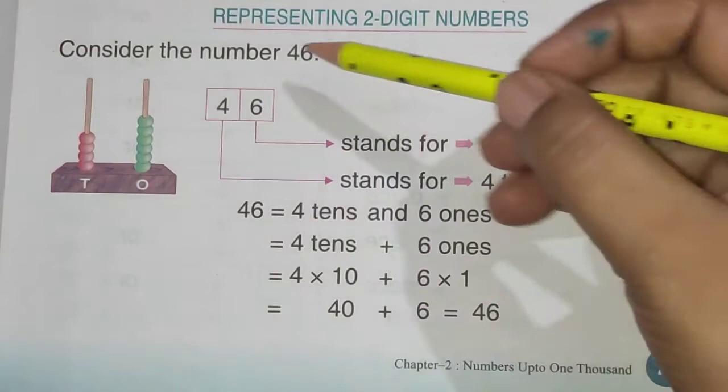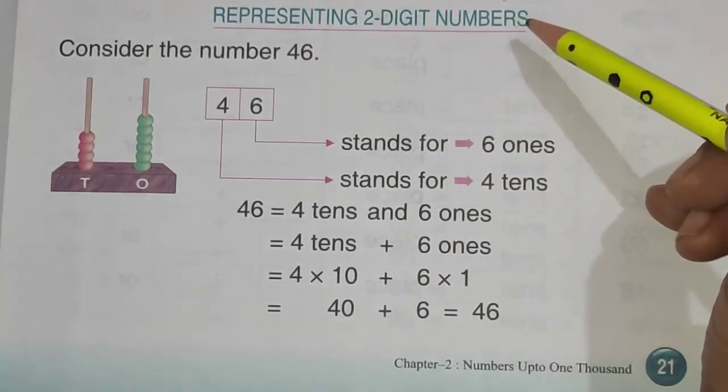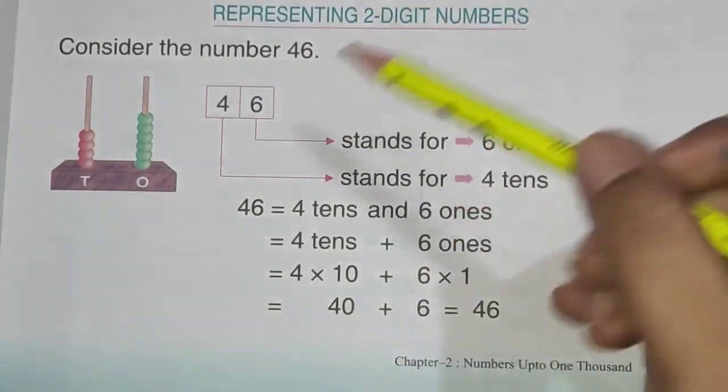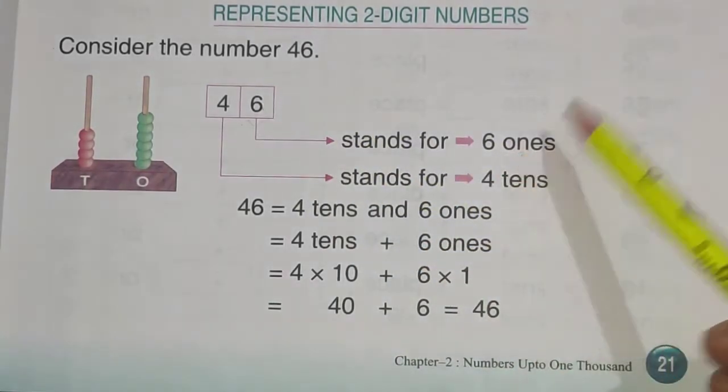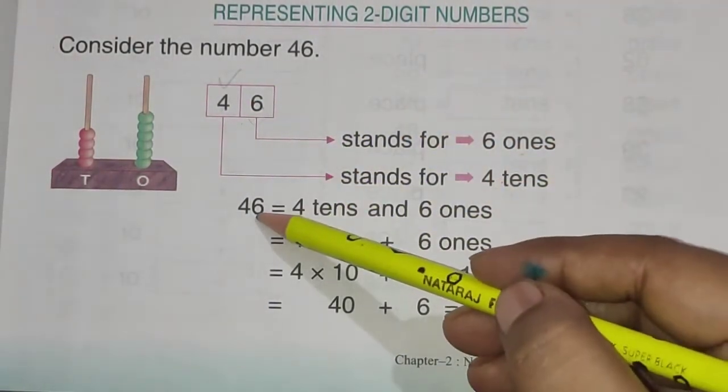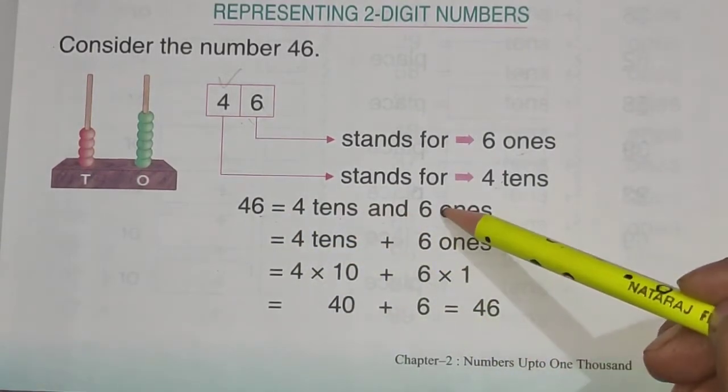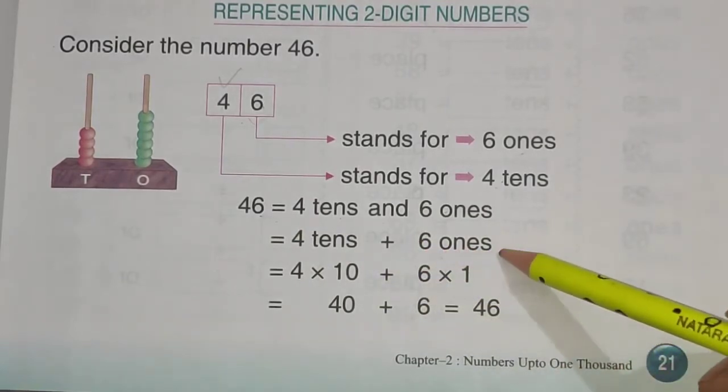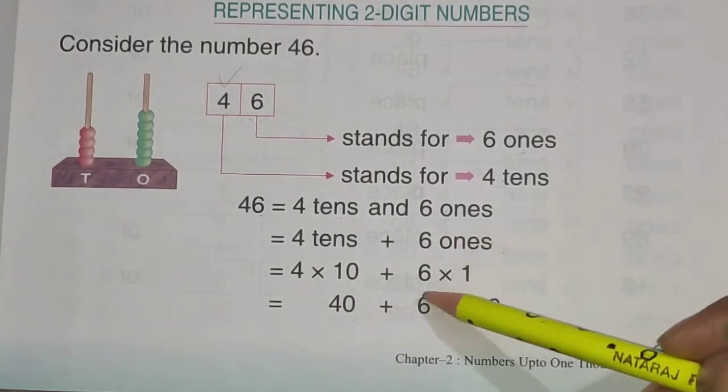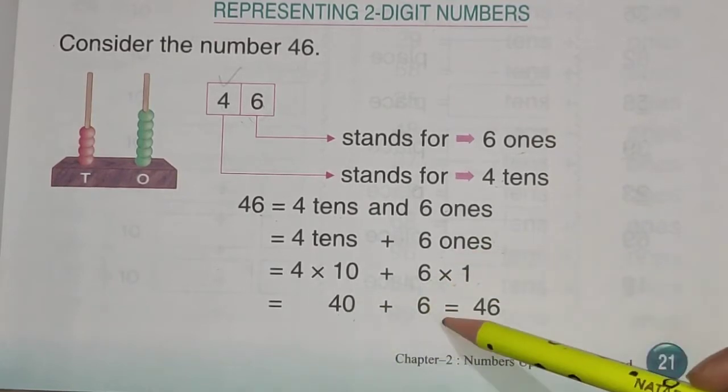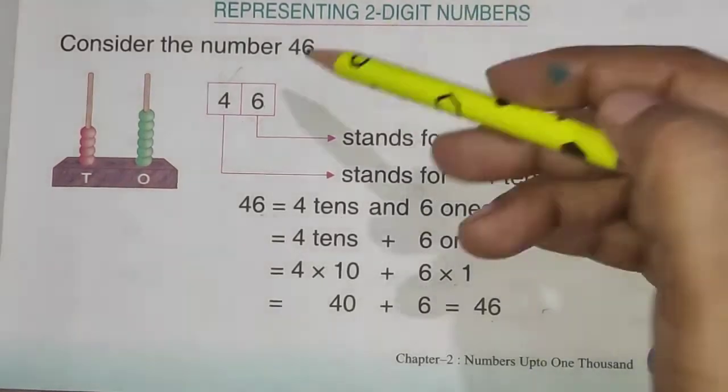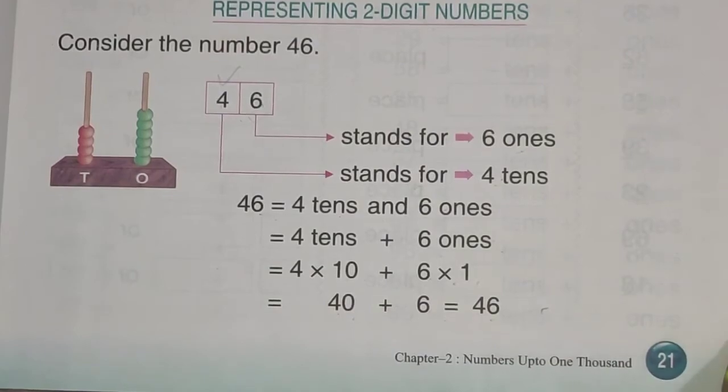Now after that representing 2 digit numbers. Ab aapko 2 digit numbers ko represent karna hai. So here we have example that is number 46. Now 6 is on ones place. So it is 6 ones. And 4 stands for 4 tens. It is on tens place. So it is 4 tens. Now 46 is equal to 4 tens and 6 ones. So it is 4 tens plus 6 ones. That is tens ki value kya hoti hai, ten hoti hai na. So 4 into 10, that is 40. And 6 ones, that is 6 into 1, six ones are 6. So 40 plus 6 is 46. Yeh kis tarah se places ke according unki values find out hoti hai. Aur uske baad mein yeh numbers form hoti hai.